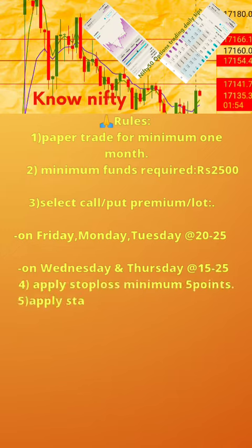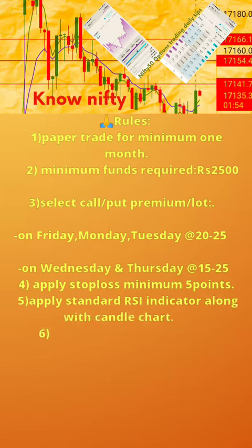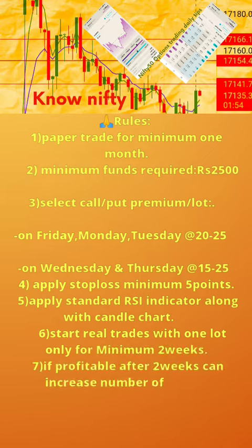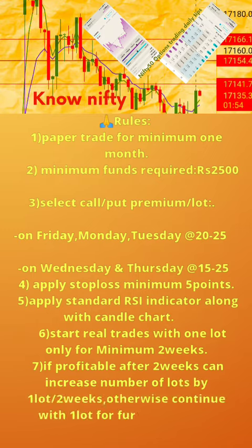4. Apply stop loss minimum 5 points. 5. Apply standard RSI indicator along with candle chart. 6. Start real trades with one lot only for minimum 2 weeks. 7. If profitable after 2 weeks, you can increase the number of lots by 1 lot for 2 weeks; otherwise, continue with one lot for a further 2 weeks.